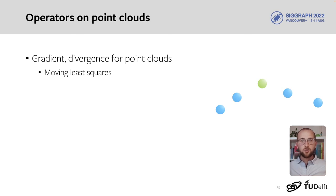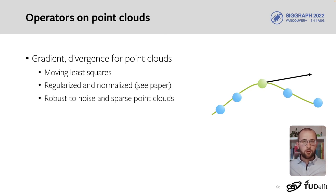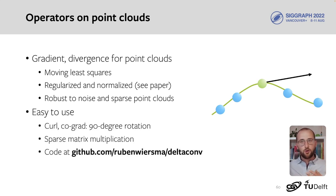In our implementation, we use moving least squares to compute gradient and divergence on a point cloud. We fit a quadratic polynomial to a small patch of points, and then take its derivative. The operators are regularized and normalized to be robust to noise and sparse regions. The operators are also easy to use. We can reuse gradient and divergence for co-gradient and curl, and the operations are applied through efficient sparse matrix multiplication. You can find our code on GitHub.